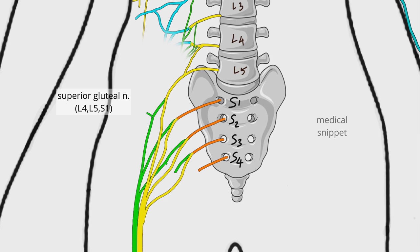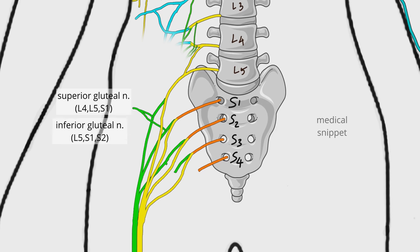The superior gluteal nerve is formed from the posterior divisions of the ventral rami of L4, L5, and S1. It supplies tensor fasciae latae, gluteus medius, and gluteus minimus. The inferior gluteal nerve is formed by the posterior divisions of the ventral rami of L5, S1, and S2. It supplies the gluteus maximus.